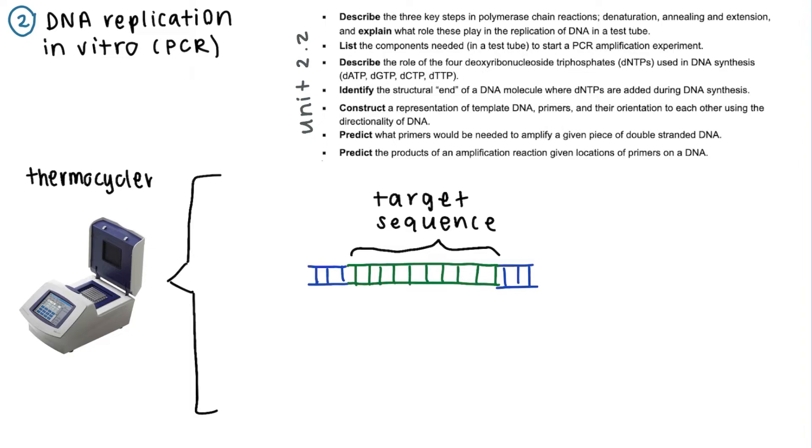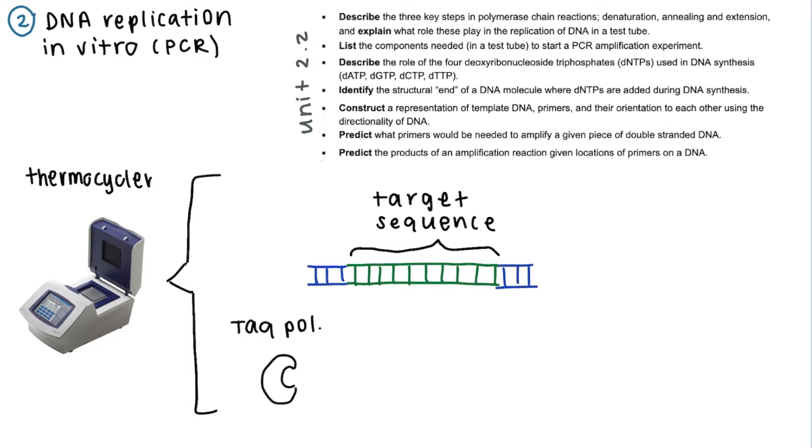This sequence to be amplified is your target sequence. And the materials that you will need to put into your thermocycler is taq polymerase, which is a type of DNA polymerase that is heat resistant because it's extracted from hot springs actually.